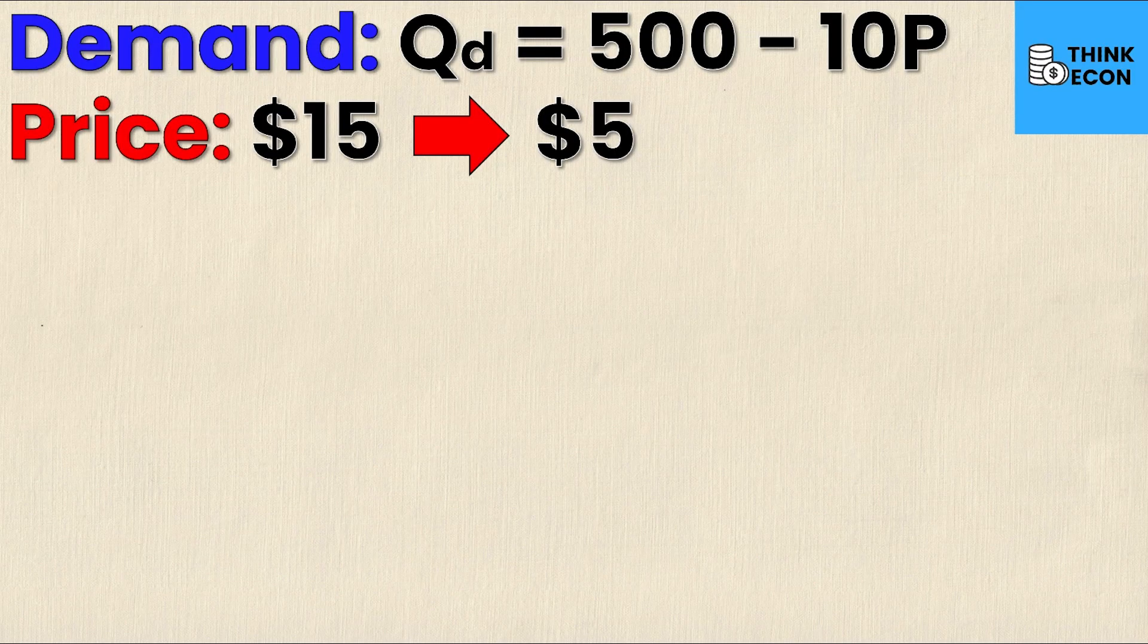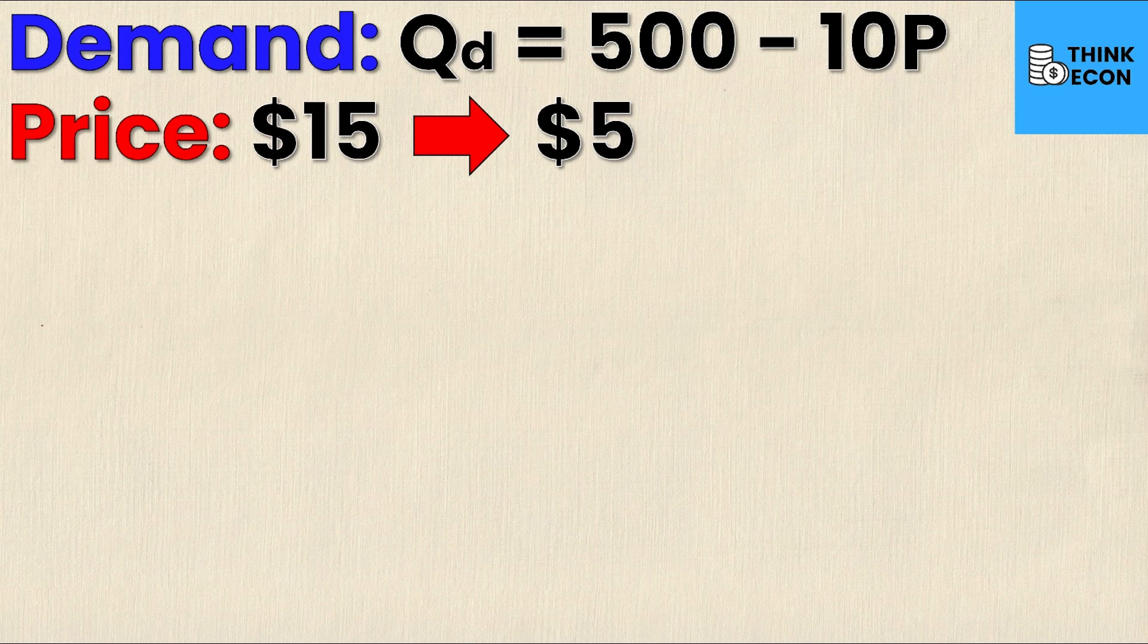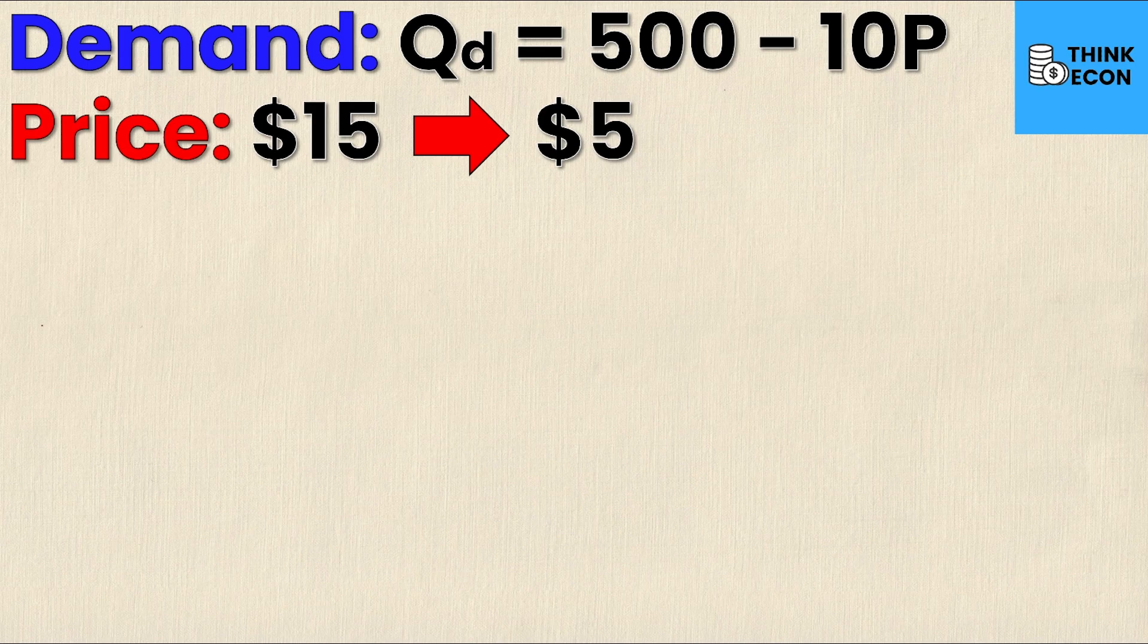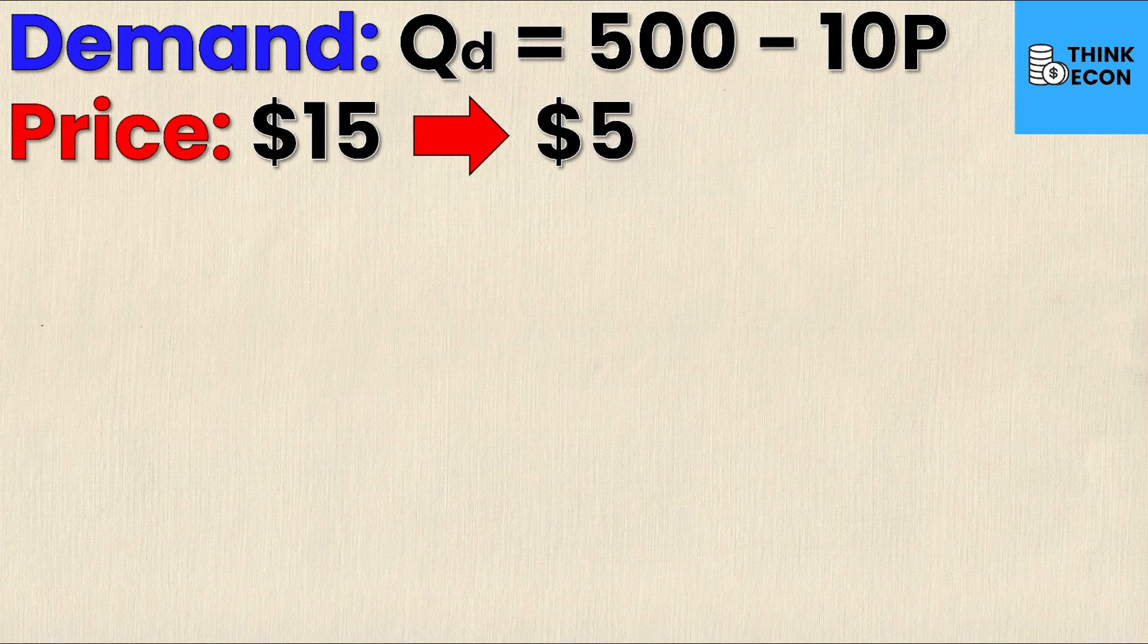So here I have my demand function which you can see is denoted as Qd = 500 - 10P, and I have some change in price, in this case a reduction in price from $15 to $5. Now using just this information I can calculate what's called the elasticity of demand, which measures my responsiveness in quantity demanded to that price change, in this case that decrease of $10.